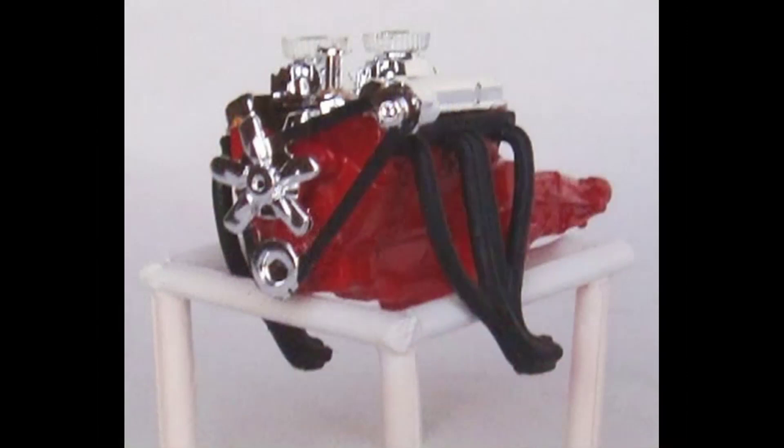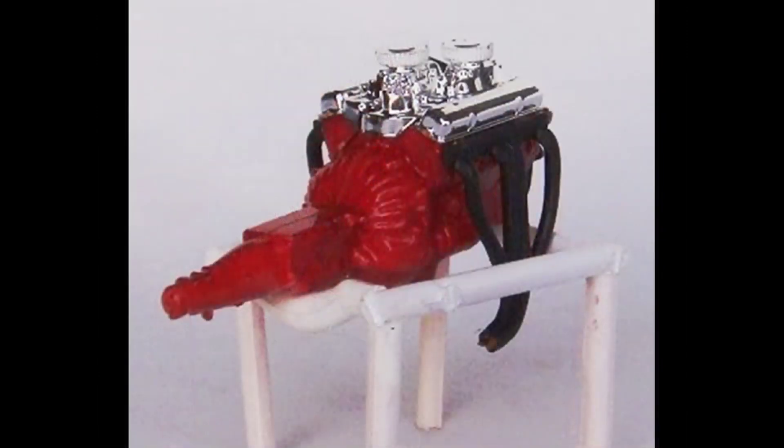Next thing is to place the rocker covers into position on the cylinder heads and then the intake manifold is glued to the engine assembly. The alternator gets glued to the fan belt and then that fan belt assembly is glued to the front of the engine. The exhaust headers then are attached to the engine assembly.